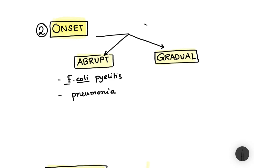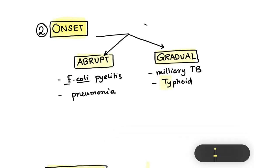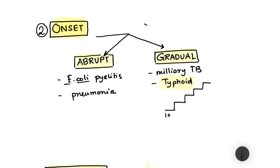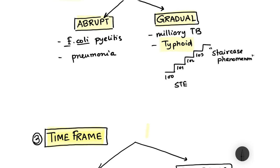Gradual onset fever is seen mainly in tuberculosis and typhoid. In typhoid, we see a very characteristic phenomenon: the fever rises in a staircase pattern — suppose 100°F, then 101°F for a few hours, then 102°F, then 103°F. This is known as the staircase or step ladder pyrexia, a very characteristic feature of typhoid and very important from an exam point of view.